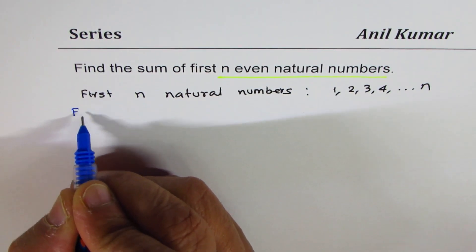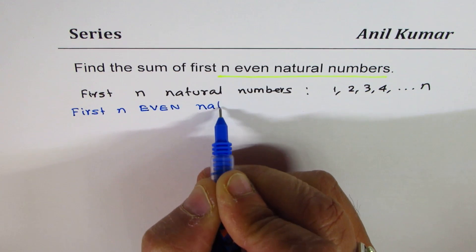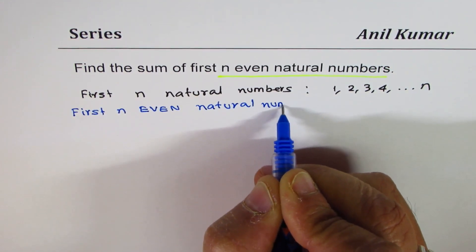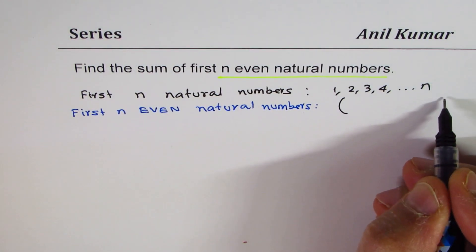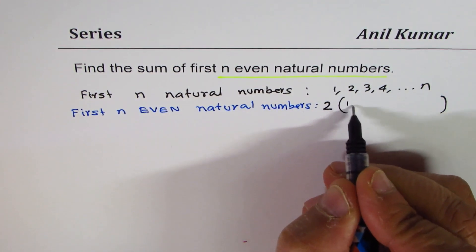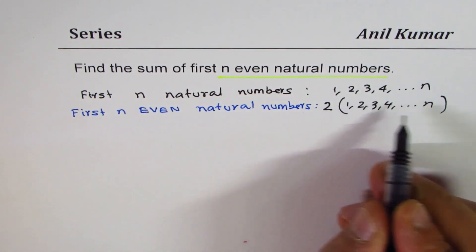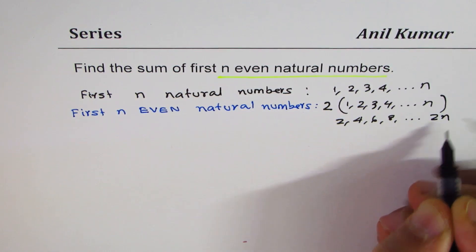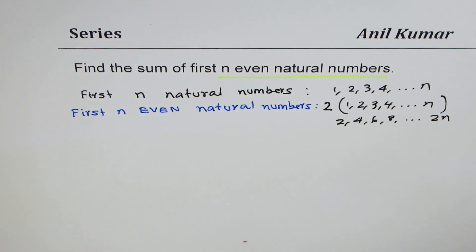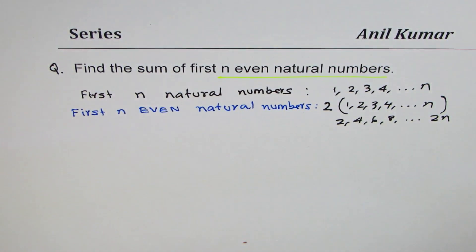What are first n even natural numbers? There are n natural numbers. If I multiply them by 2, they become even. So 1, 2, 3, 4, so on till n — if I multiply each number by 2, it becomes 2, 4, 6, 8, so on till 2n. So these are my first n even natural numbers.